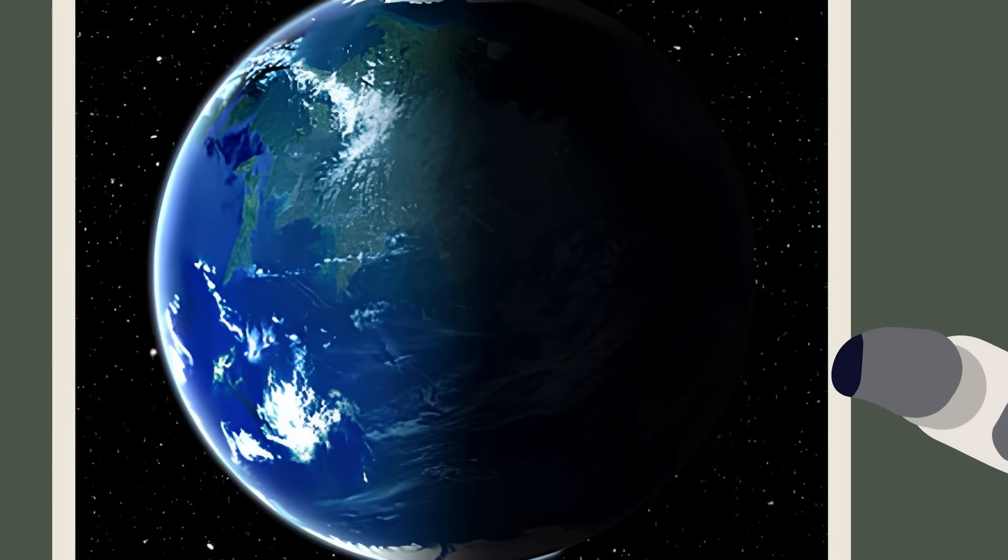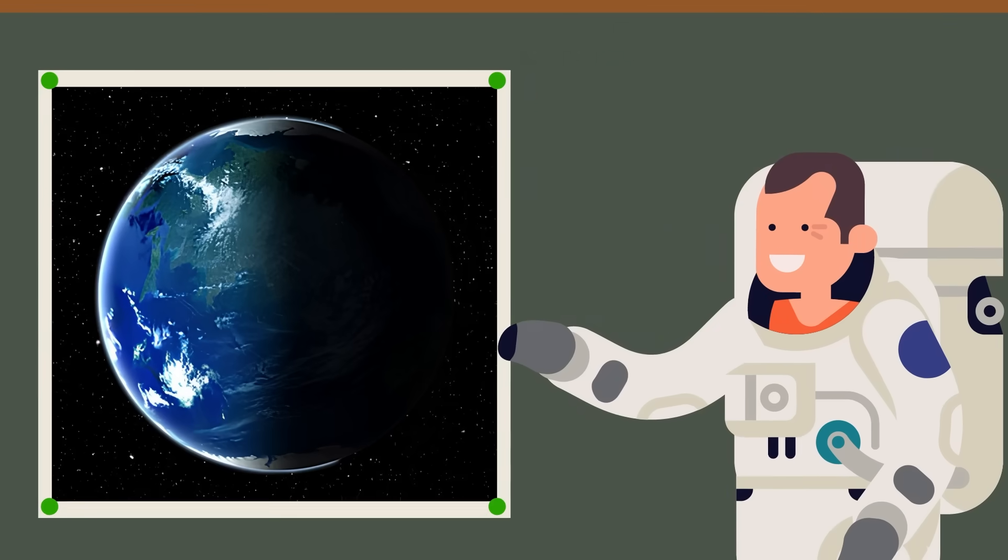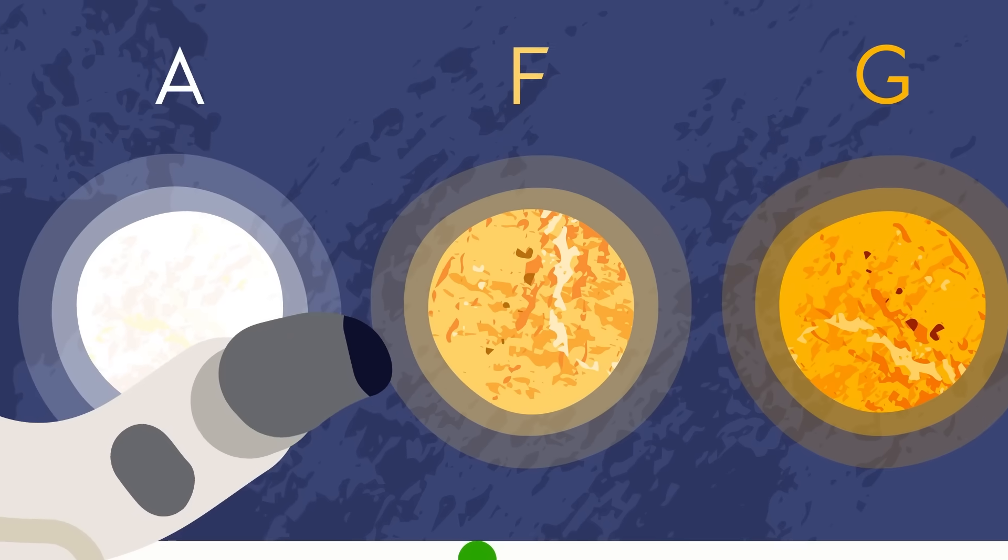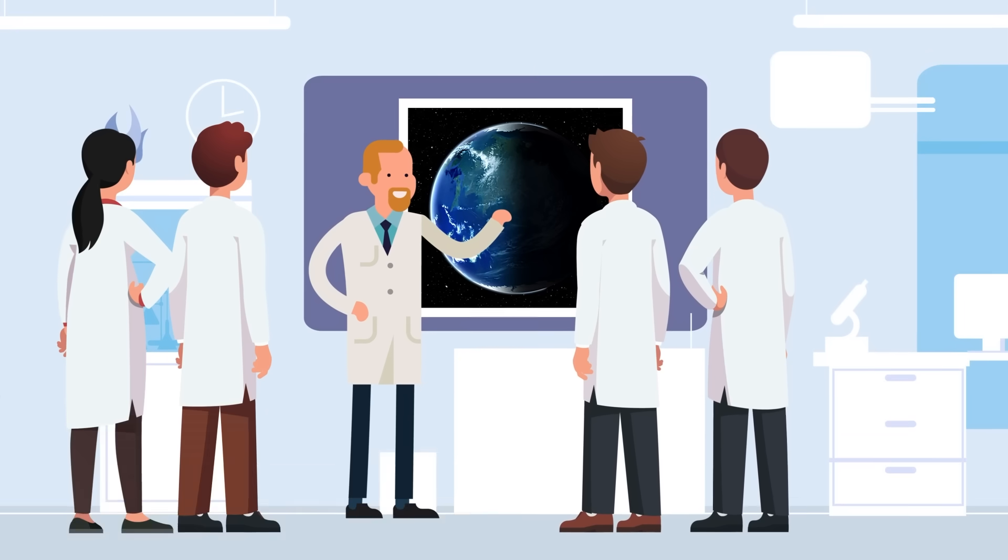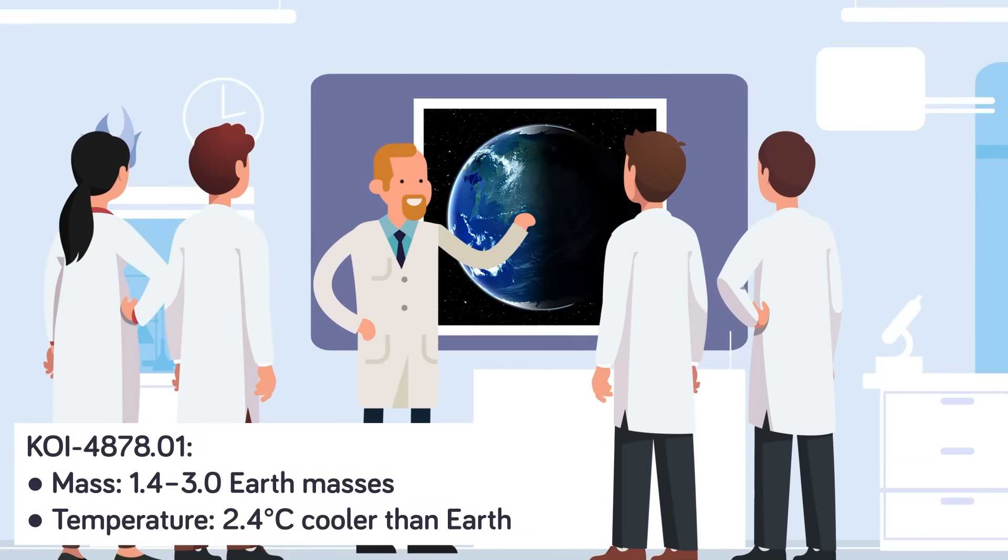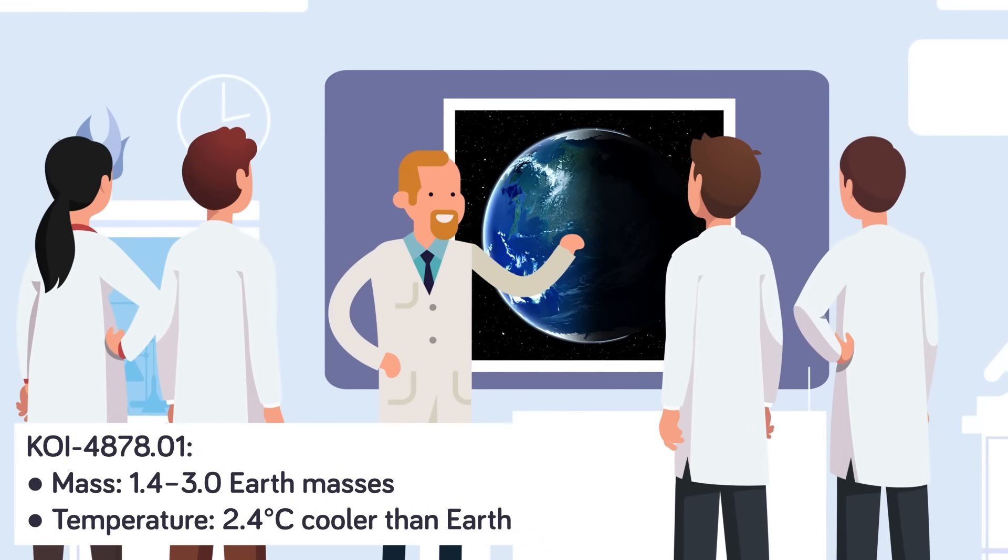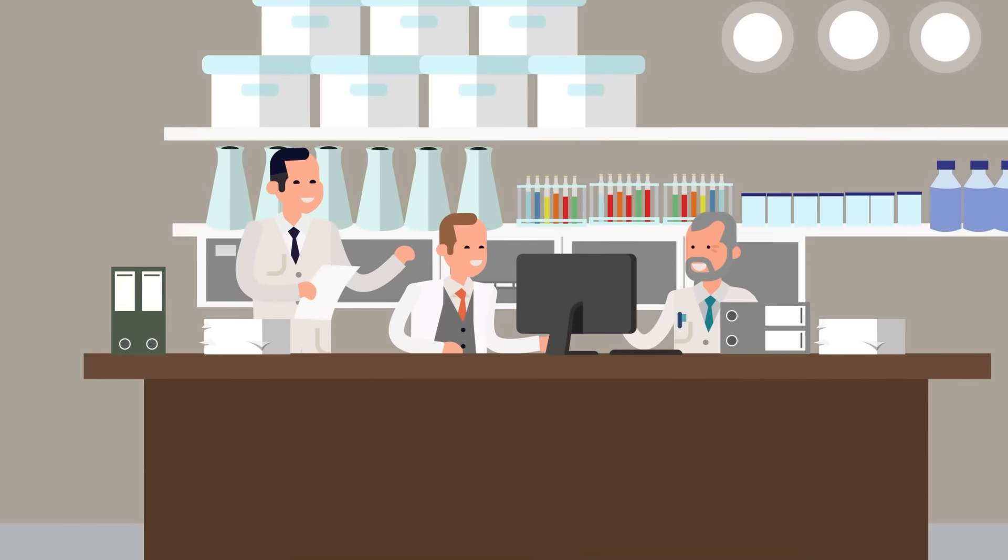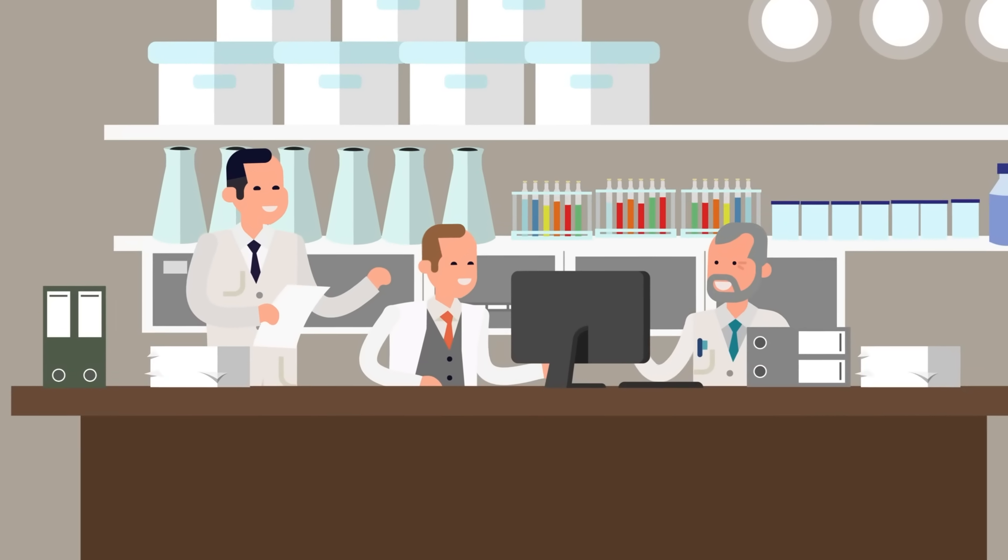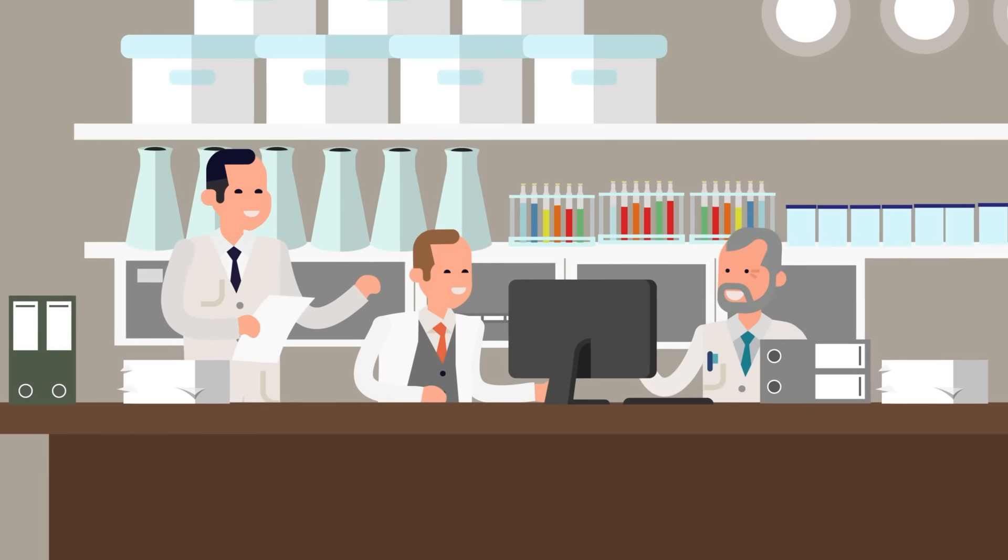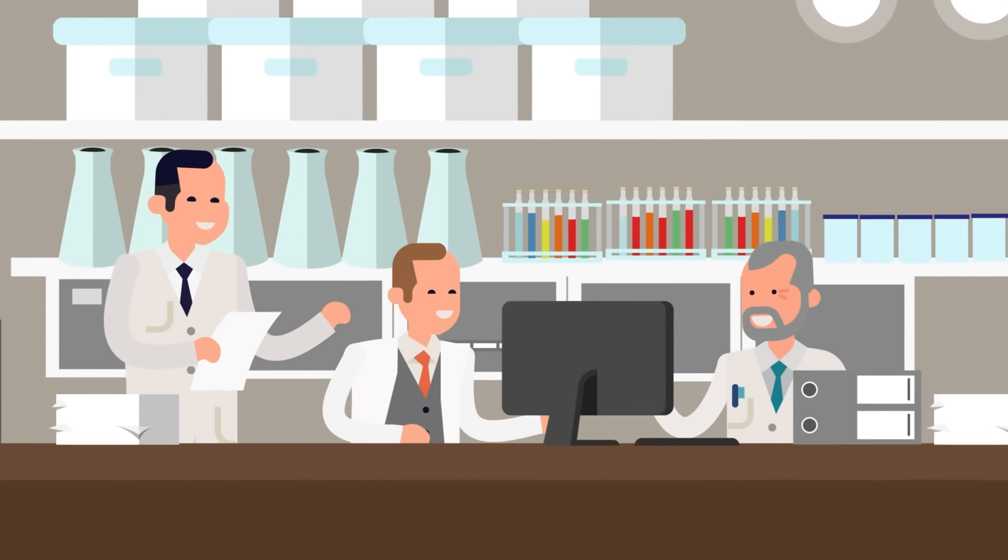Another potential superhabitable planet is KOI 4878.01. This planet is orbiting an F-type star, slightly smaller than the sun, with a temperature of around 6031 Kelvin. The planet's mass is somewhere between 1.4 and 3 Earth masses, and has an average surface temperature around 2.4 degrees Celsius less than Earth's. It has more greenhouse gases than Earth, making up for this lower temperature with a capacity to trap heat. It completes an orbit around its star every 449 Earth days, and should theoretically be in the habitable zone of the star.